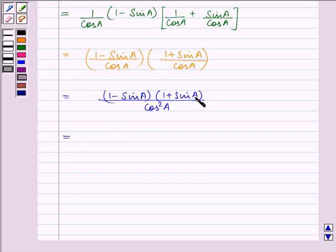(A minus B)(A plus B) is A squared minus B squared where A is 1 and B is sin A, so it will be 1 minus sin squared A upon cos squared A.